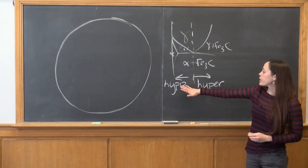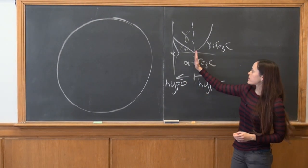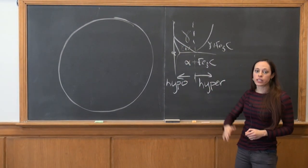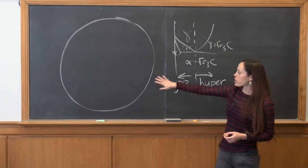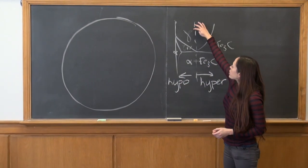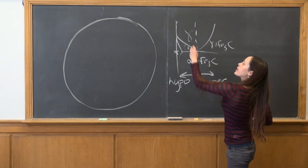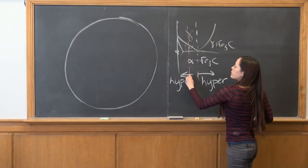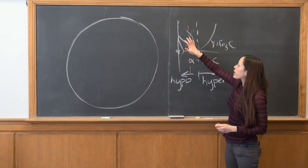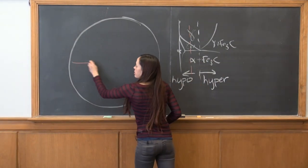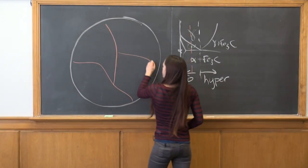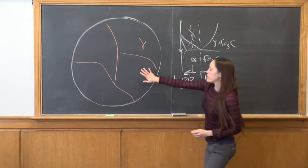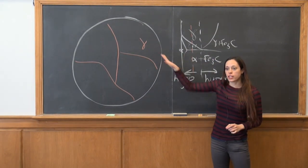Okay, so now we know where we are. We're on this side, lower carbon content of the eutectoid structure. So we can start to sketch. If we start at a higher temperature, we are in the purely austenite phase. So here we have just briefly austenite.